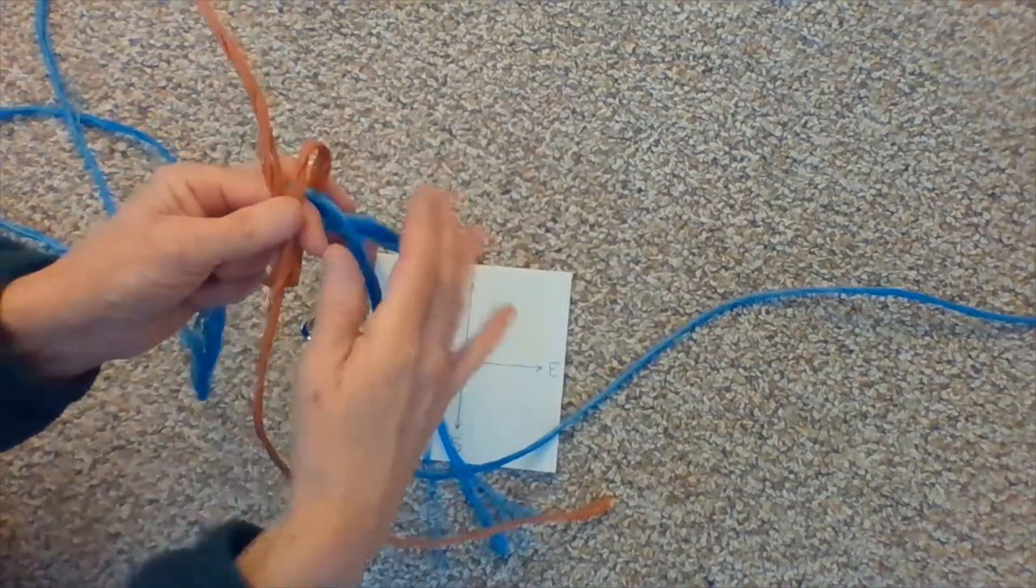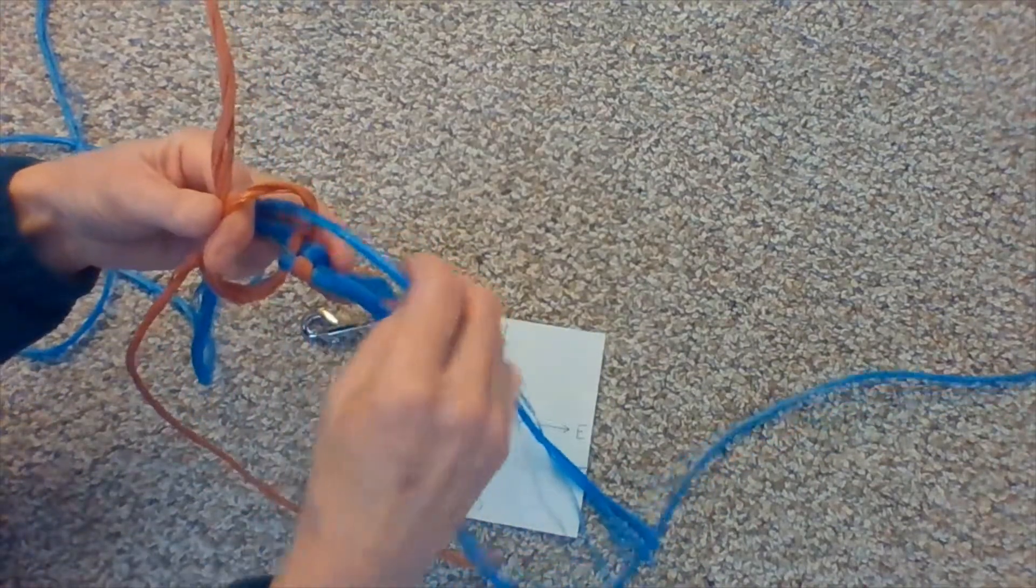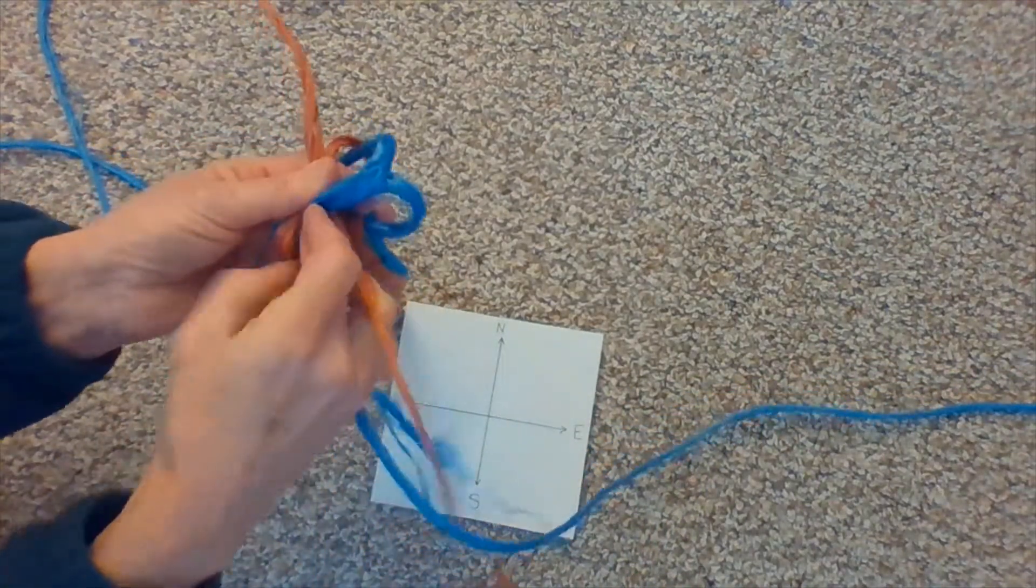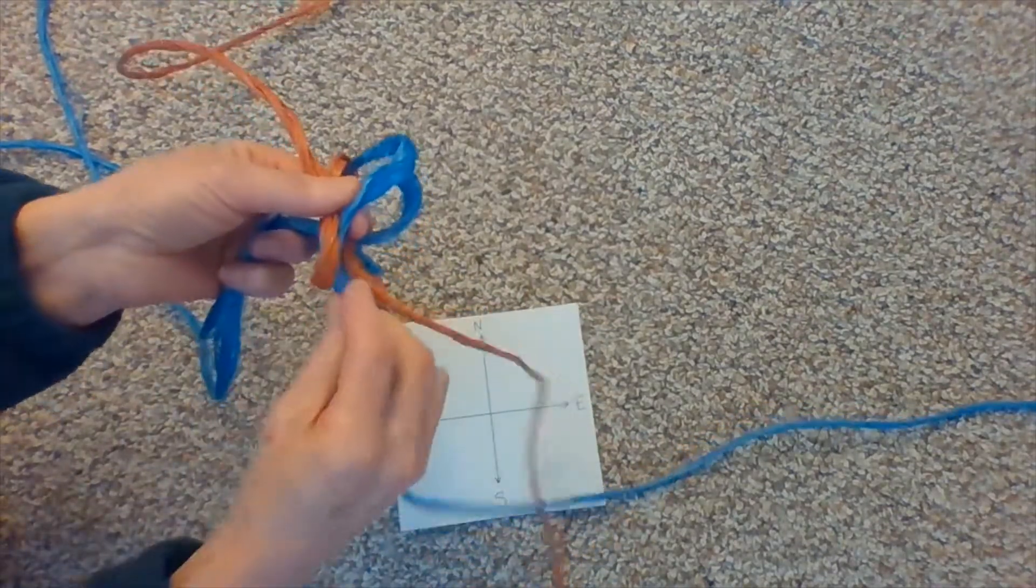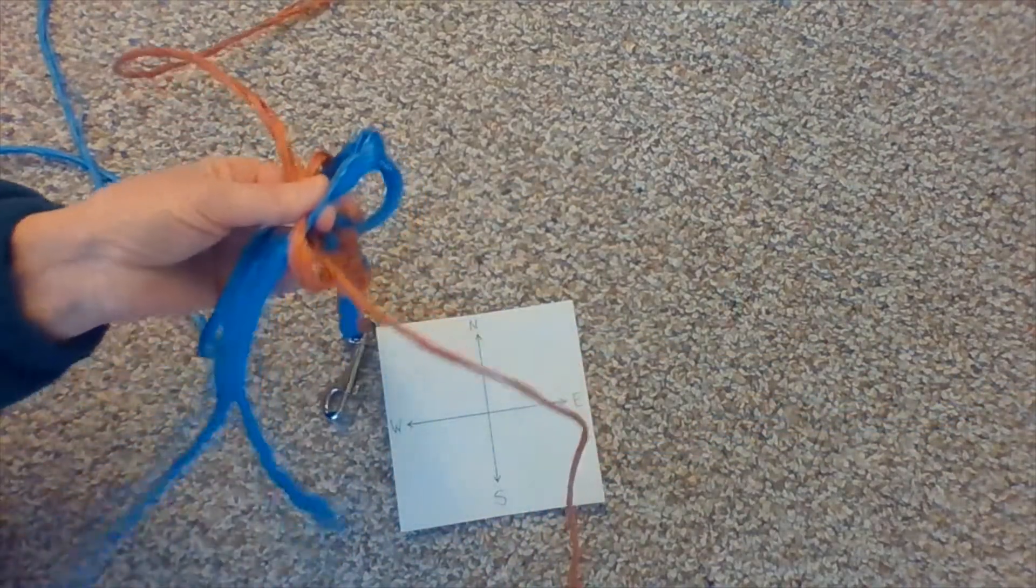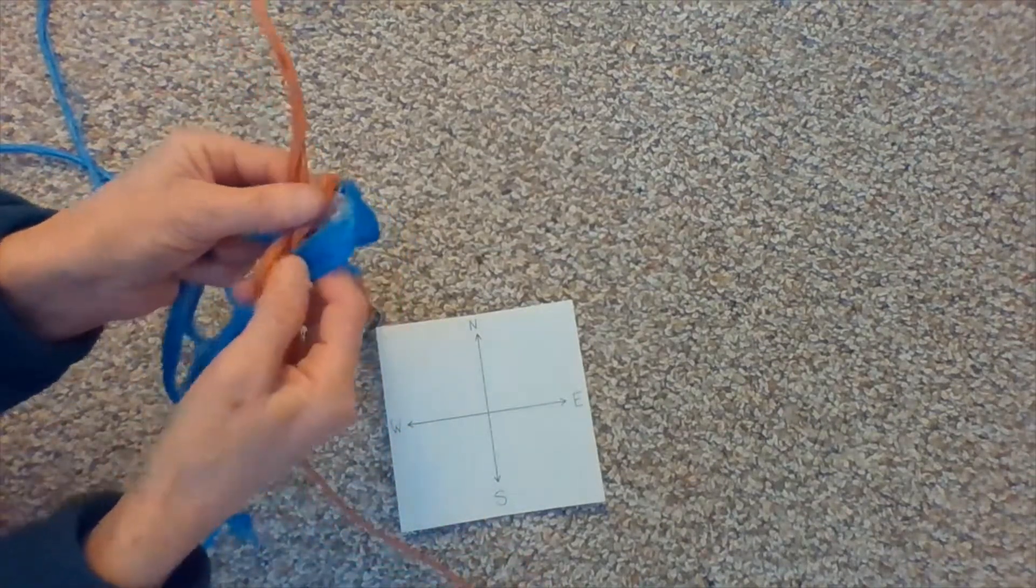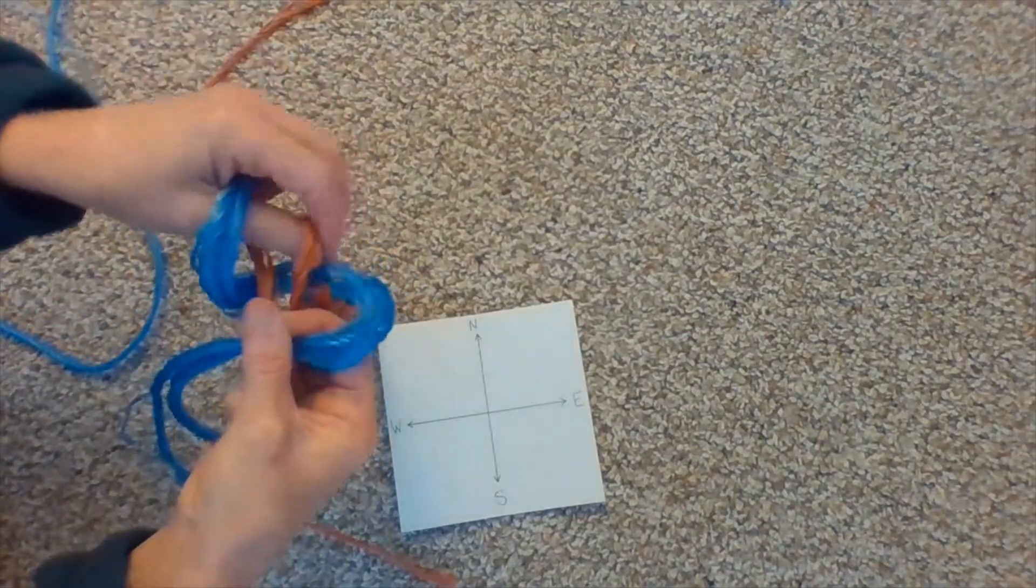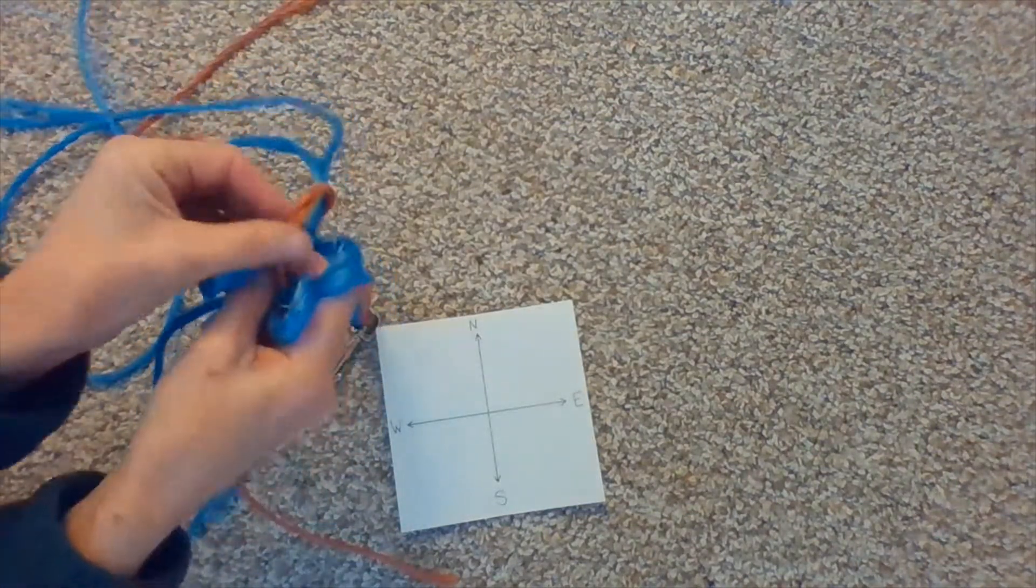Then, when I pull it through, I'm going to pull both pieces through. So, for this bottom thread, over and under. Keeping your pieces lined up. And then, the top one, over and through.